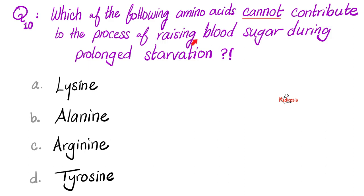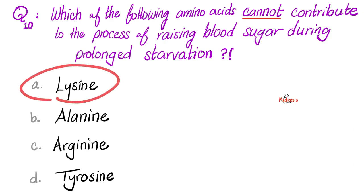Glucogenesis — genesis of glucose — means I can make glucose. But if I am a non-glucogenic amino acid, it means that I cannot raise your blood sugar, I cannot make glucose. The answer is A, lysine, because lysine is ketogenic, not glucogenic. What's the other amino acid that is also ketogenic? If you said leucine, you're absolutely correct.